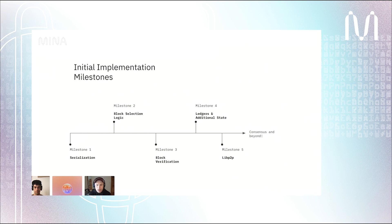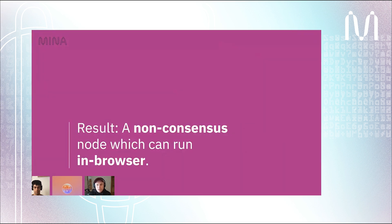Now let's look at our current roadmap, which is very incremental. After building the serialization primitives, we'll move into implementing the block selection algorithm. Then we'll be implementing block verification, and after that we'll be adding support for the ledger state and some additional state objects. Finally, we'll be building out LibP2P support in the browser so that the node can receive blocks and submit transactions. At the end of these initial milestones, we'll have a non-consensus node which can run in browser.